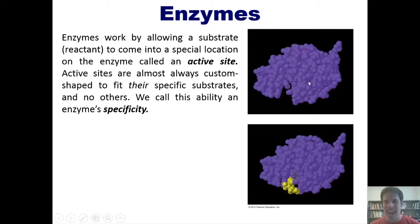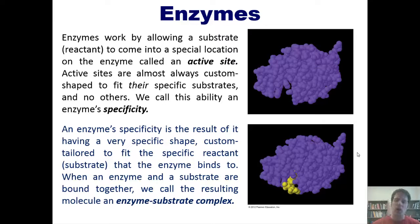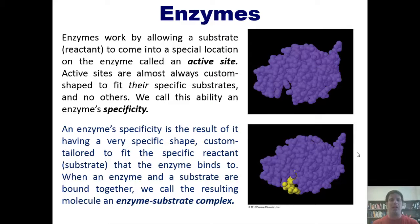In this diagram, we can see an enzyme whose physical shape is represented by all these purple blobs, where it is not interacting with a reactant or substrate. When it comes closer in to a substrate, the substrate docks in its active site. An enzyme's specificity, then, is the result of it having a very specific, custom-tailored shape to fit the specific reactant or substrate that the enzyme binds to. When an enzyme and a substrate are bound together, we call the resulting molecule — enzyme and substrate together — the enzyme-substrate complex.